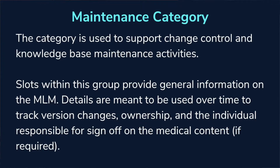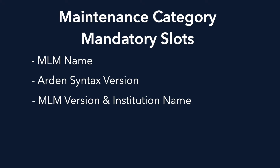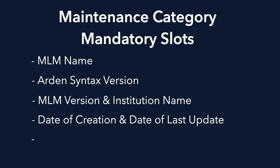The first category is the maintenance category. This category is used to support change control and knowledge-based maintenance activities — it's a general description of what the MLM is. The details are meant to track version changes, ownership, and who's responsible for the medical content. Mandatory slots in this category include the MLM name, title, Arden Syntax version, MLM version, institution, date of creation, date of last update, and the MLM's current status — such as whether it is production, research, or in a testing phase.